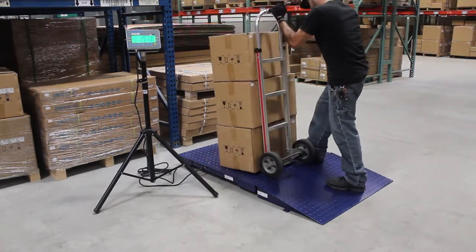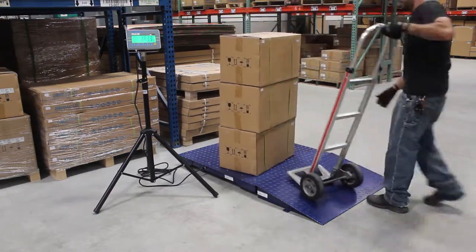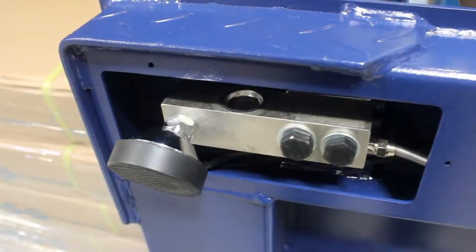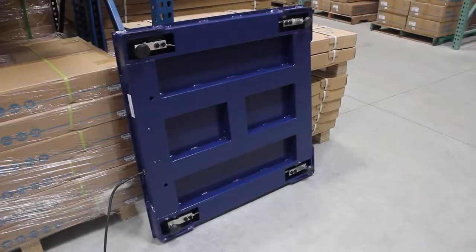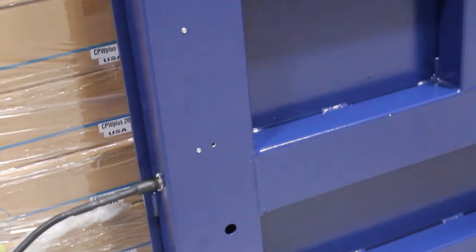PT platform offers features to help increase stability and ensure safety. For improved traction, the large steel base contains a diamond plate textured surface. Four sturdy leveling feet are adjustable to compensate for uneven weighing surfaces.